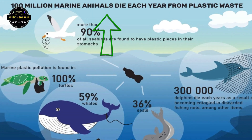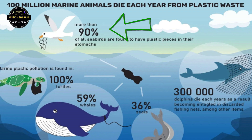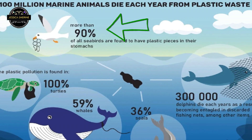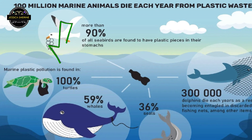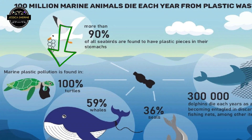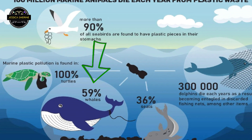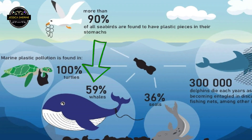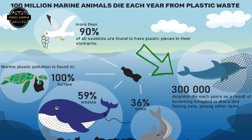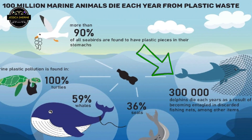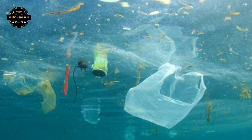100 million marine animals die each year from plastic waste. More than 90% of seagulls are found dead because of plastic in their stomachs. 100% of turtles die thinking that plastic covers are jellyfish and eat them. 59% of whales die due to plastic threads stuck in them. Seagulls mistake water bottles as food and eat them. 300,000 dolphins die each year as a result of becoming tangled in discarded fishing nets among other items.